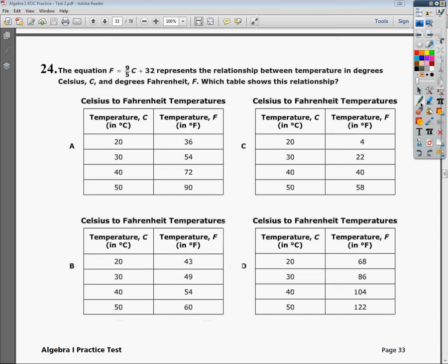This is the Algebra 1 End of Course Practice Test 2, question number 24. The question says, the equation F equals 9 fifths C plus 32 represents the relationship between temperature in degrees Celsius, C, and degrees Fahrenheit, F.